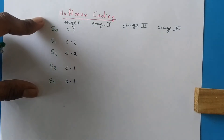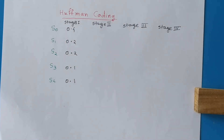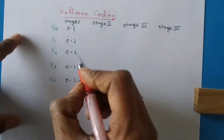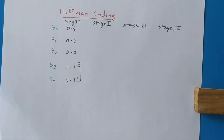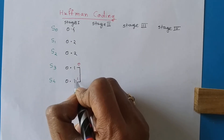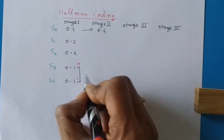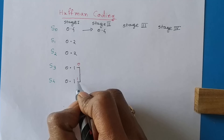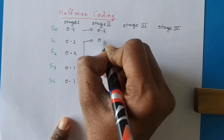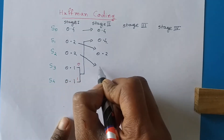The first step of Huffman coding is to arrange the symbols in decreasing order of their probability, and we have already done that. In the next stage we have to add the two lowest probabilities and assign 0 and 1 to them. Once we add these probabilities we transfer this sum to the next stage. The addition of these two probabilities is 0.2, and we arrange it above the existing 0.2.